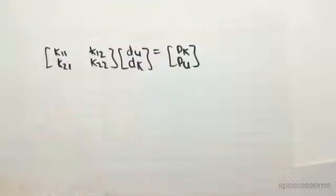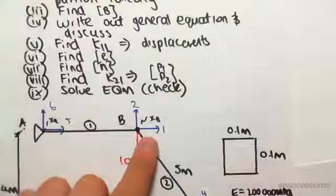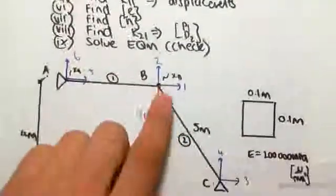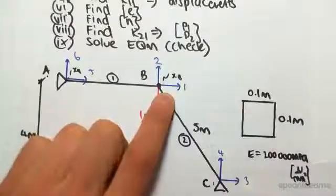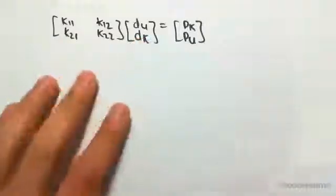Now, when we look at our problem, you can see that member 1 and member 2 are free to move. So we don't know their displacements yet. They're going to be called D unknown because we don't know what they're moving by.